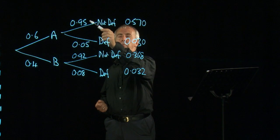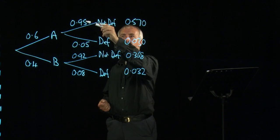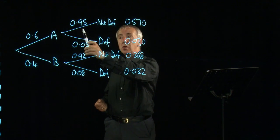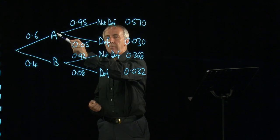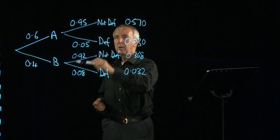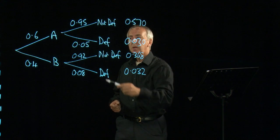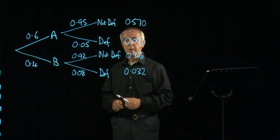They are the probabilities of getting defective or not defective, conditional on whether they came from machine A or machine B. And they vary. And so it matters which machine they came from.